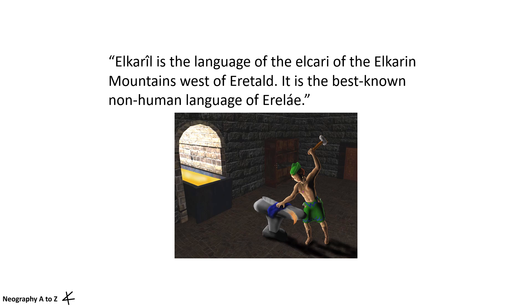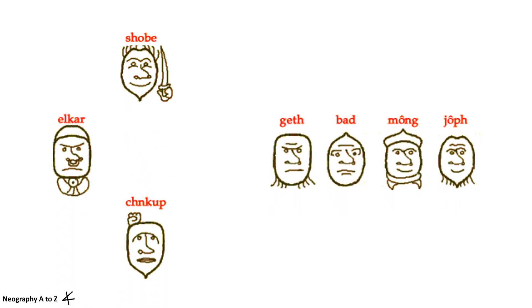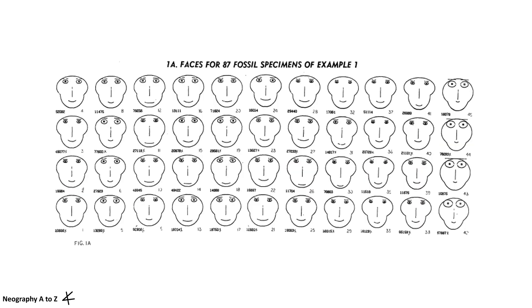From the website: "Elkaril is the language of the Elkari of the Elkarin mountains west of Eretald. It is the best known non-human language of Erelai." The writing system is unique in that it appears to be logographic, or even totem-like, but is in fact an alphabet.